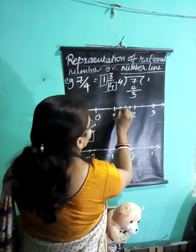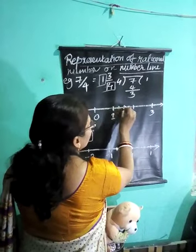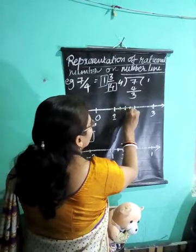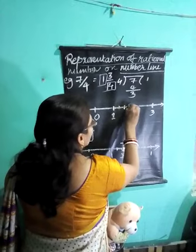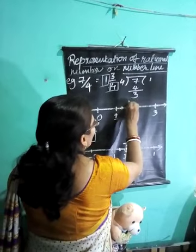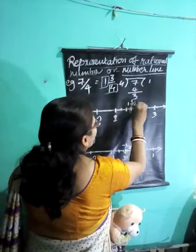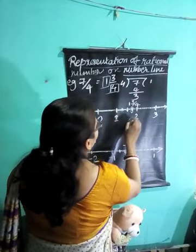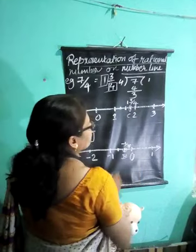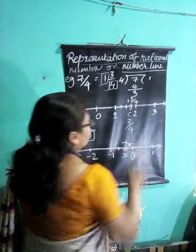Now, after 1: this is 1 and 1 by 4, this is 1 and 2 by 4, and this is 1 and 3 by 4. So you can mark it as 1 and 3 by 4. You can represent it, or you can write it as 7 by 4 also.